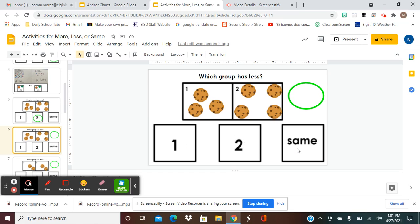Is it group one, group two, or they're just the same? Group one and group two have the same amount. Which one do you think? Give me the answer now. And the answer is group one. Group one has less cookies than group two. Okay, good job.